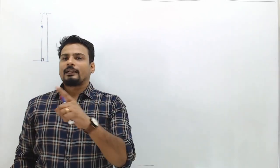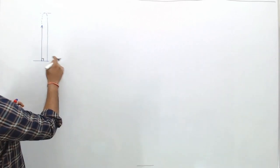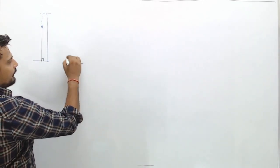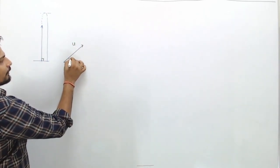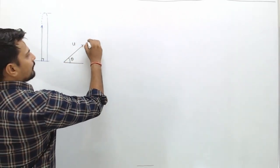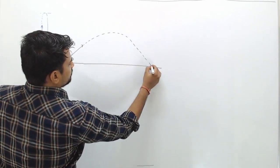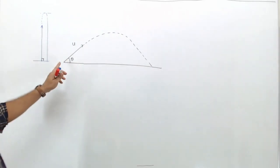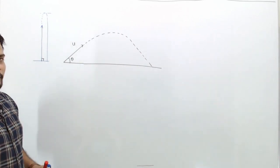Now instead of throwing it vertically, if I make the body move upward at a velocity u making some angle theta with the horizontal, the body would go up like this and come back to the ground in this curved path. This motion is called projectile motion, and the body which has been projected is called the projectile.